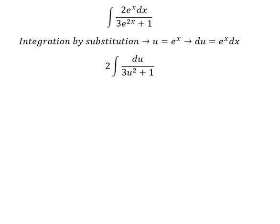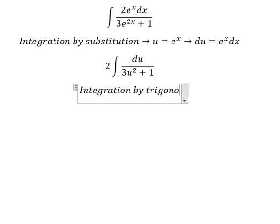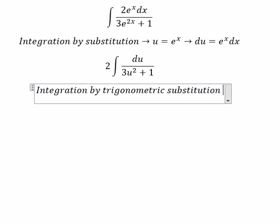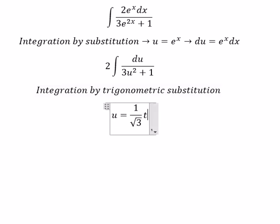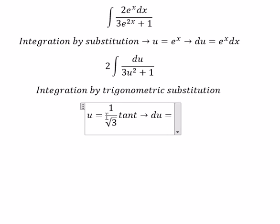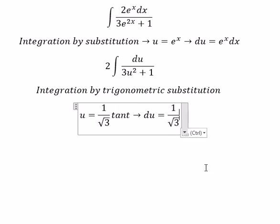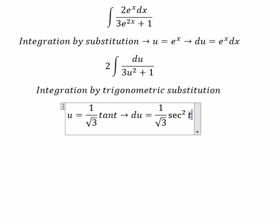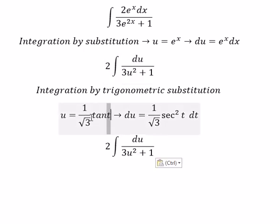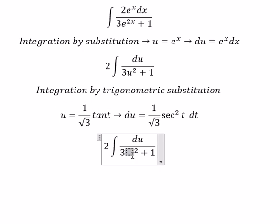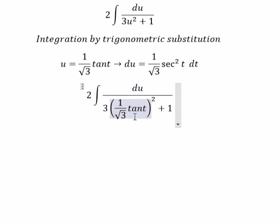Next, we can use integration by trigonometric substitution. We let u equal to 1 over the square root of 3, times tan t. So du equals 1 over the square root of 3, multiplied by secant squared t, dt. We then substitute this into the integral.